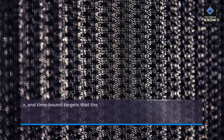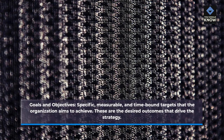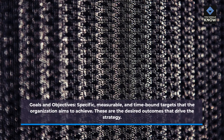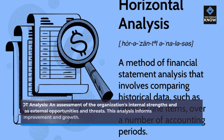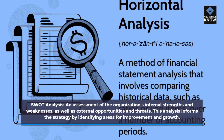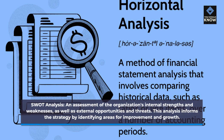Goals and objectives: Specific, measurable, and time-bound targets that the organization aims to achieve. These are the desired outcomes that drive the strategy. SWOT analysis: An assessment of the organization's internal strengths and weaknesses, as well as external opportunities and threats. This analysis informs the strategy by identifying areas for improvement and growth.